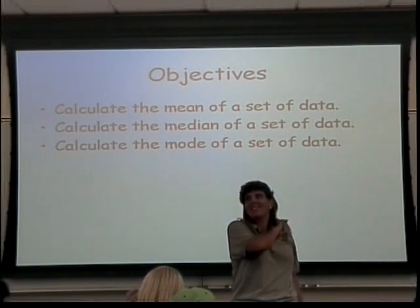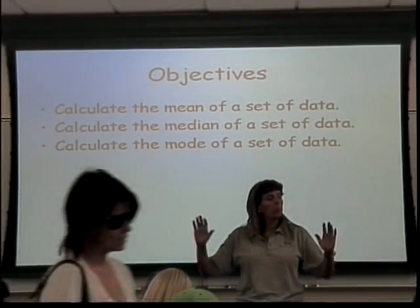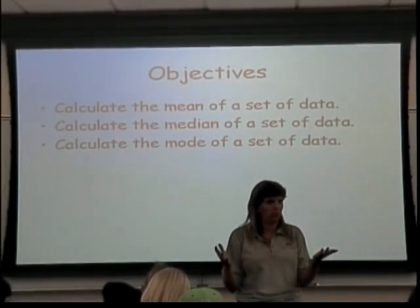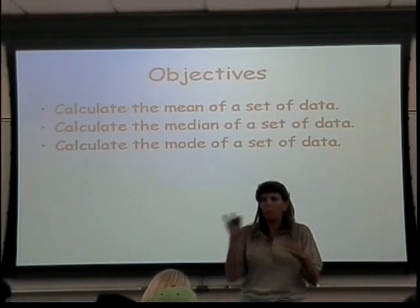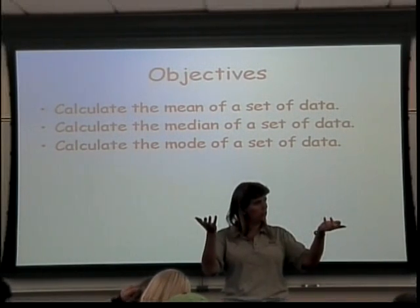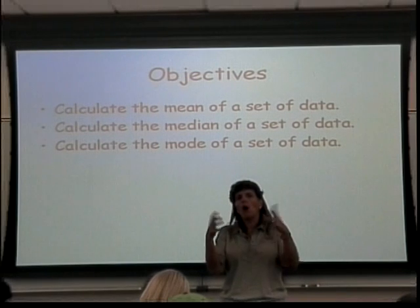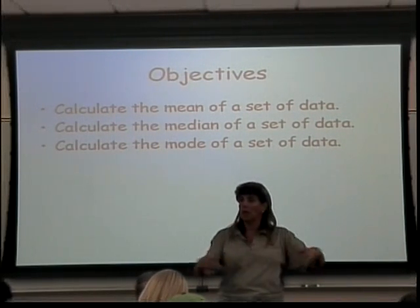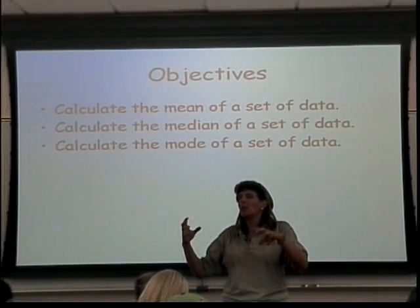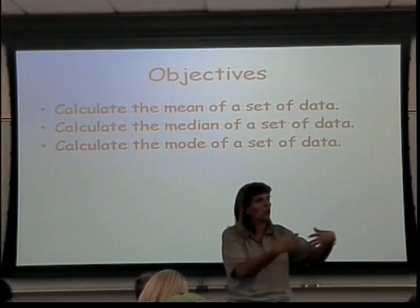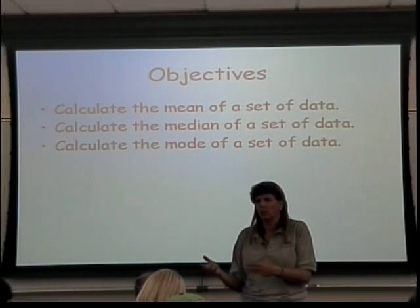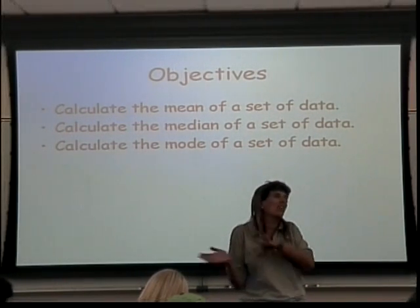The mode does none of those. The mode is just the piece that occurs the most. It's possible to have two pieces that both occur the same amount, in which case you can have two modes. It's also possible to have all your pieces occur more than once but in the same amount, in which case you have no mode. The way you determine if you have no mode is if the number of pieces you're counting turns out to be more than half your data, then you say there's really no mode.